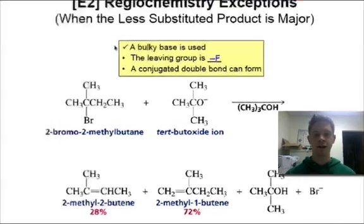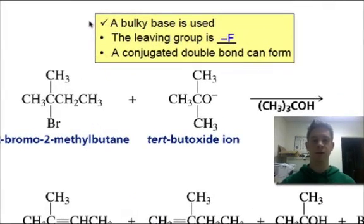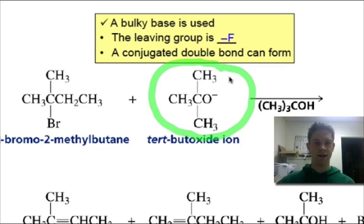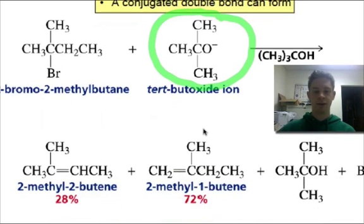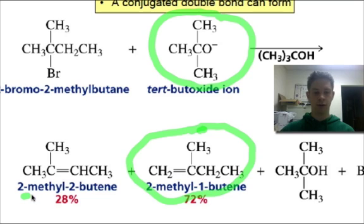In the first case, if a bulky base is used, that base will tend to approach the less substituted carbon for steric reasons. When we use the bulky tert-butoxide ion as a base, the less substituted double bond is formed in an almost 3 to 1 ratio over the more substituted double bond.